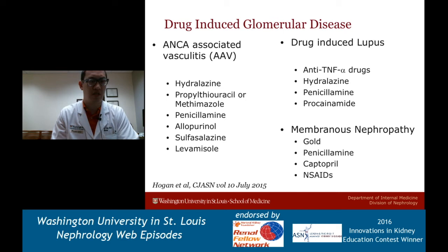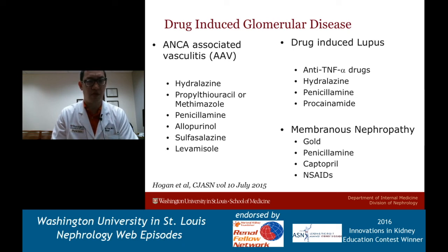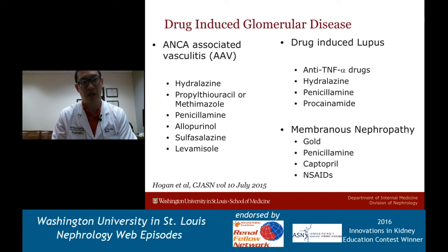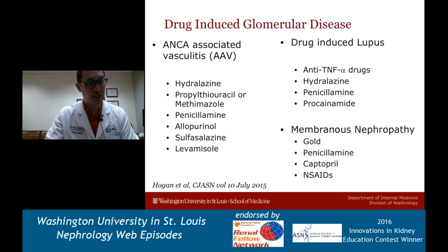There's a nice article in CJASN from 2015 - I've given you the citation if you want to look it up - that talks about drug-induced glomerular disease. ANCA-associated vasculitis is associated with not only the anti-hyperthyroid medicines PTU and methimazole, but hydralazine, penicillamine, allopurinol, sulfasalazine, and levamisole, which has been used more recently as a contaminant in cutting cocaine. Other glomerular diseases such as drug-induced lupus can be seen with hydralazine, anti-TNF-alpha drugs, penicillamine, and procainamide. Membranous nephropathy is associated with gold, penicillamine, captopril, and NSAIDs - not a comprehensive list, but a quick overview.